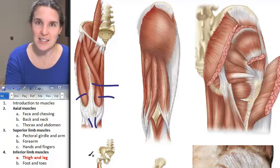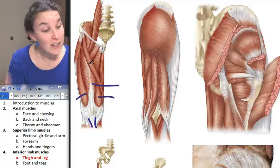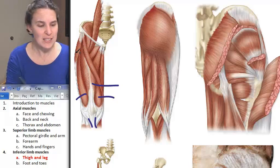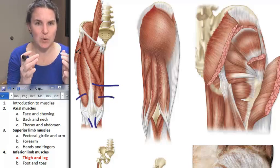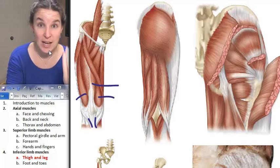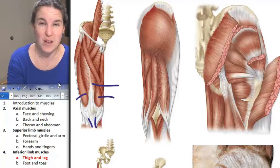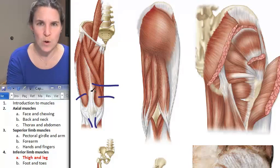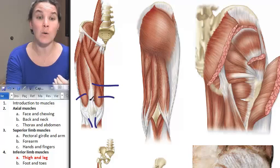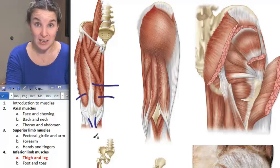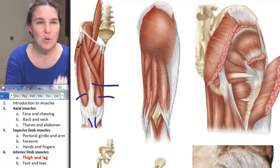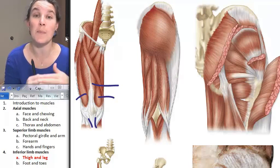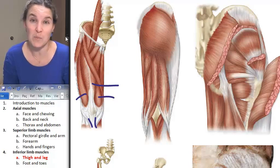Vastus lateralis goes up and attaches to the greater trochanter of the femur. So vastus lateralis and medialis both attach to the femur, whereas rectus femoris actually attaches to the ilium of the pelvis. The consequence is that rectus femoris will not only move the leg since it's attached to the tibia, but also move the thigh because it's attached to the pelvis — it spans two joints, causing movement in both.